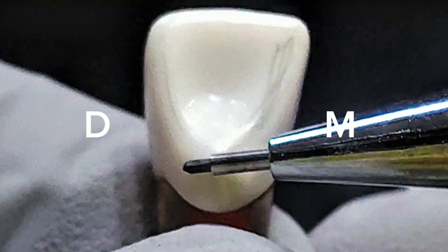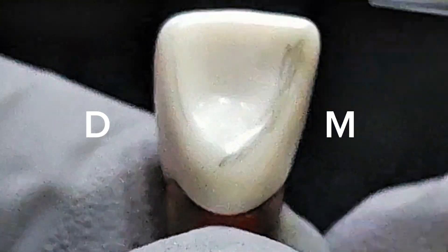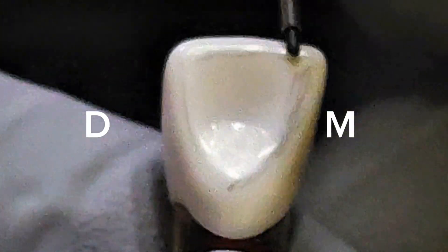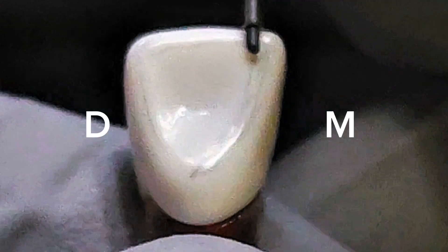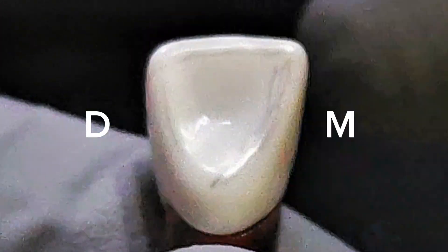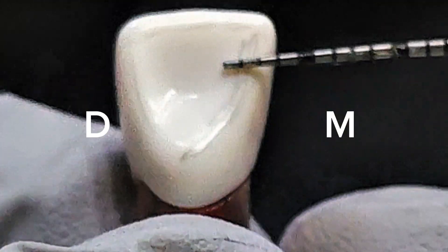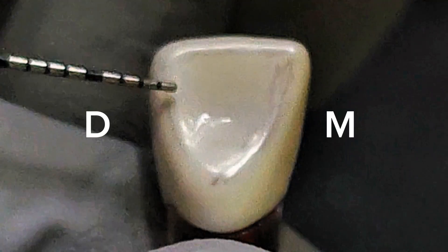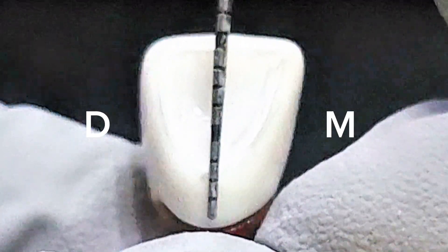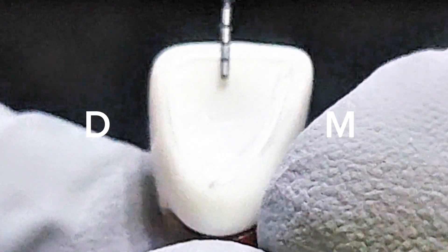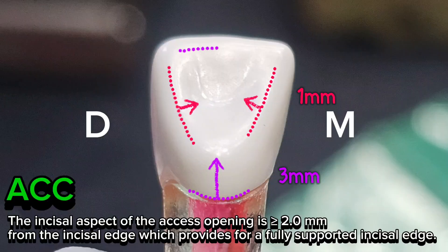So 1mm, and I'm just marking the borders. These are the borders - 1mm and 1mm and 3mm from the CEJ of the lingual area, and 2mm from the incisal ridge.